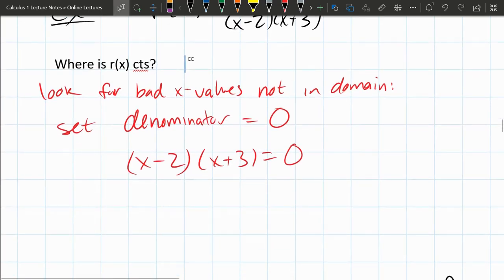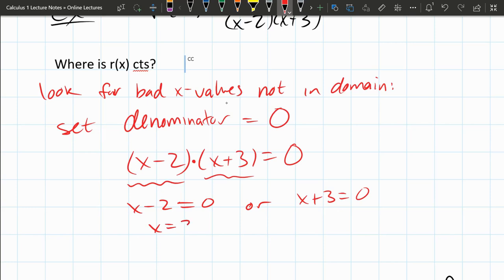So algebraically, there's really nothing to do. You'd have the zero product property, so either this is zero or this is zero. And x equals positive two or x equals negative three.